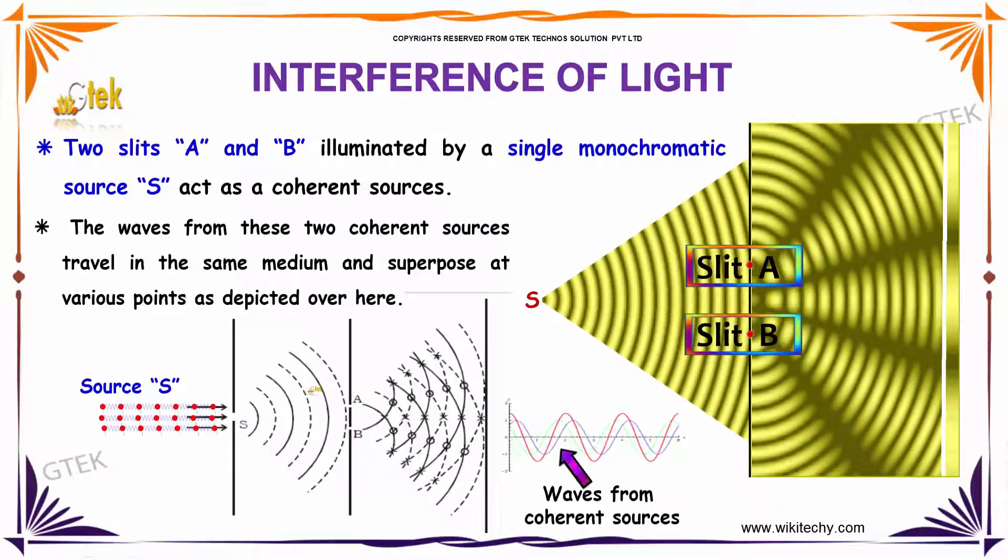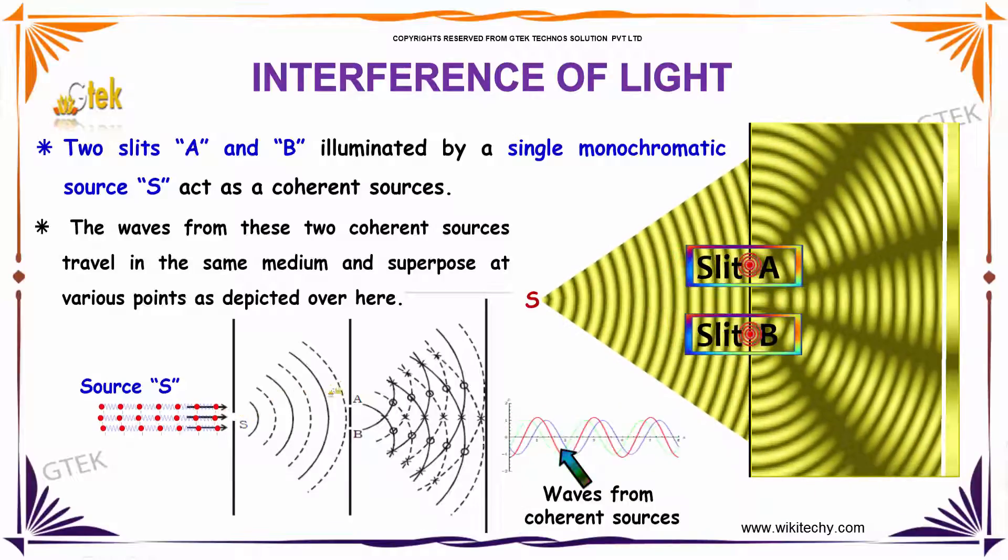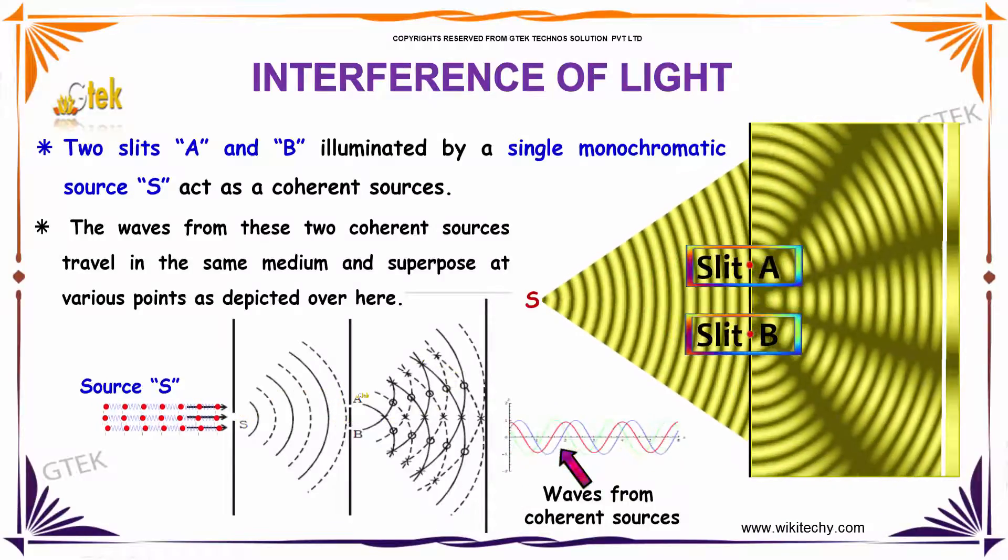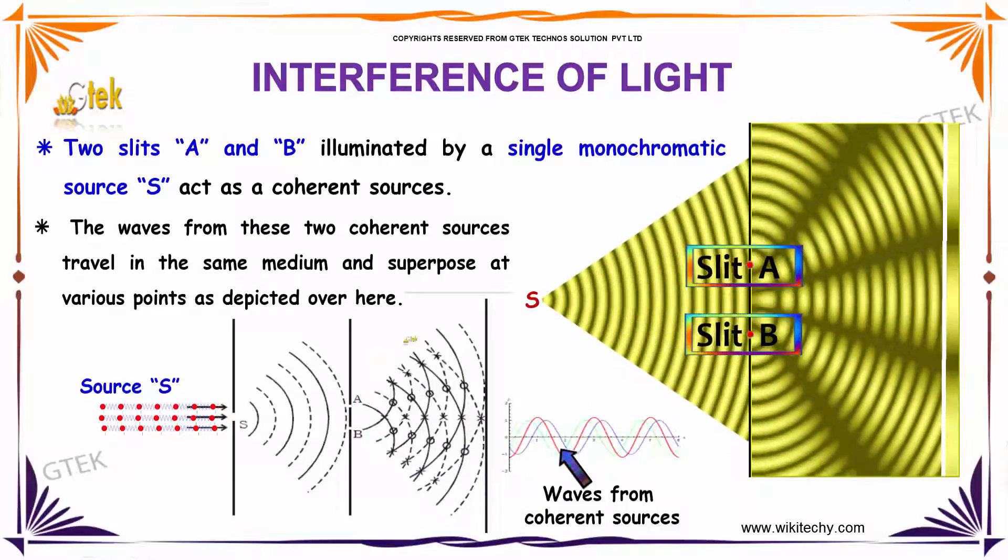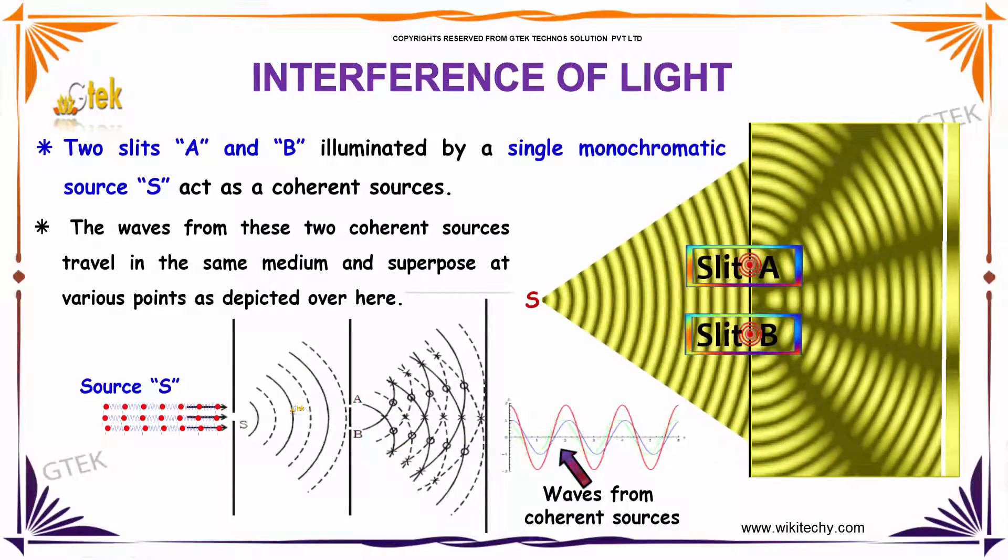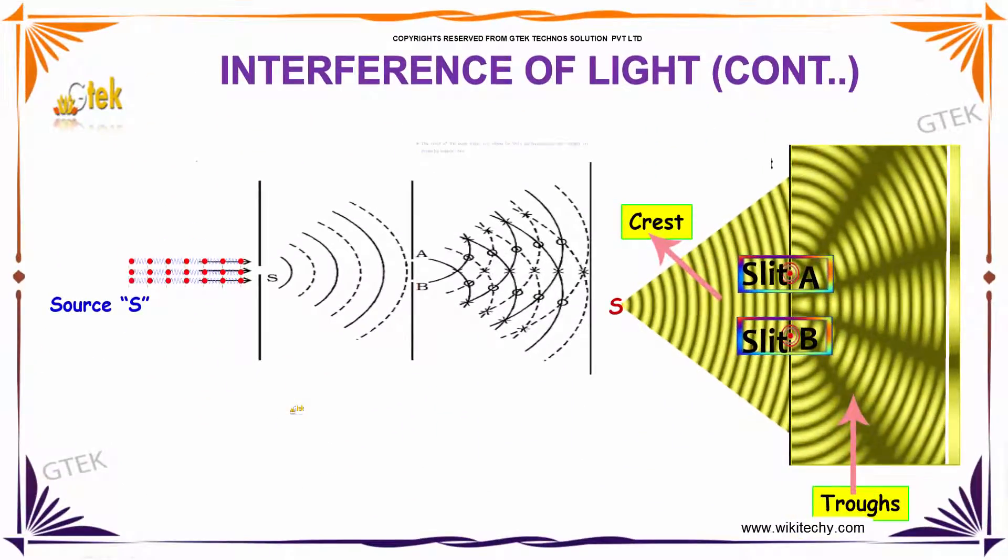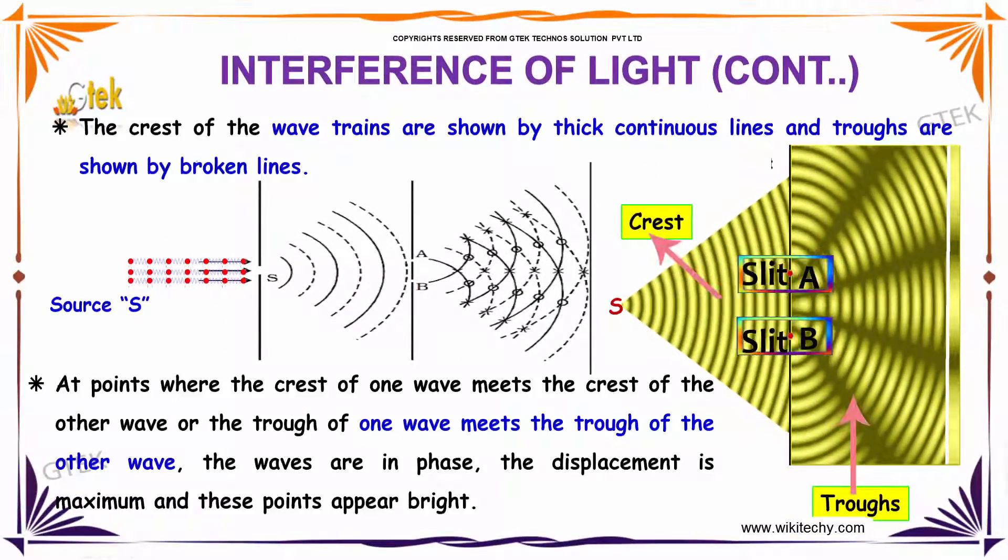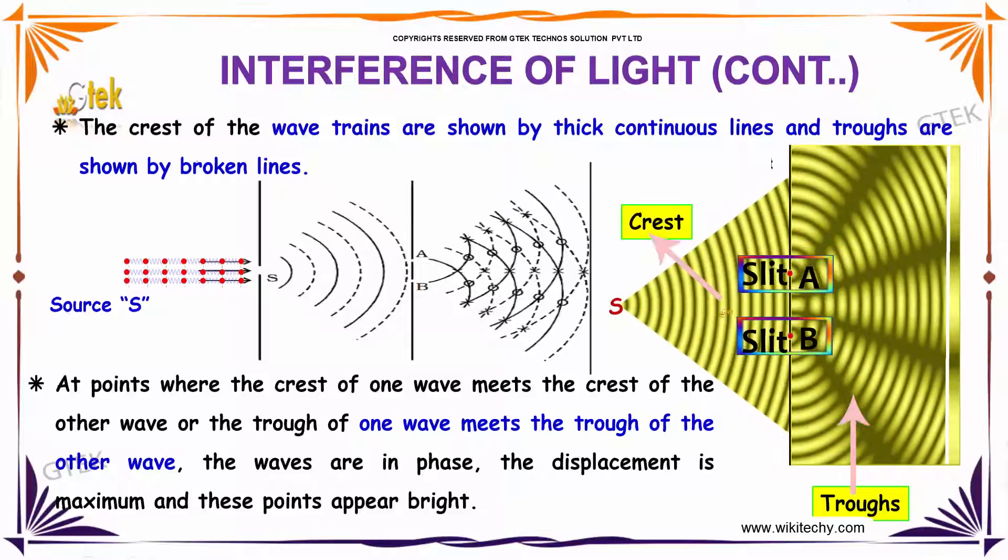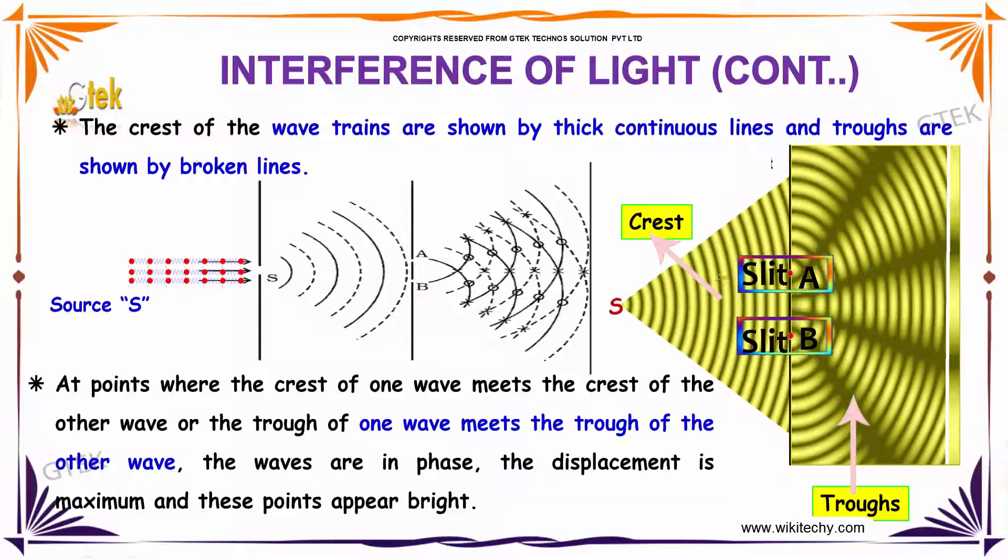The waves from these two coherent sources travel in the same medium and superpose at various points as depicted here. The crests of the wave trains are shown by thick continuous lines and troughs are shown by broken lines.